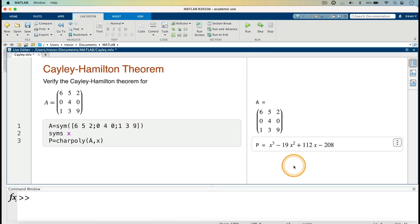And we have that our characteristic polynomial is x cubed minus 19x squared plus 112x minus 208.